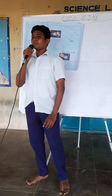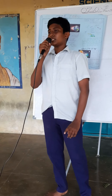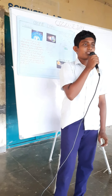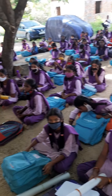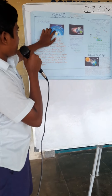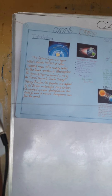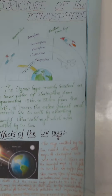World Ozone Day was named after the discovery by French physicists Charles Fabry and Henry Buisson. The ozone layer is located in the lower portion of the stratosphere, approximately 15 km to 30 km from the earth. It protects us from harmful ultraviolet rays emitted by the sun. If these rays fall on our skin or on plants, the plants lose their green nature and animals or humans suffer from skin diseases.